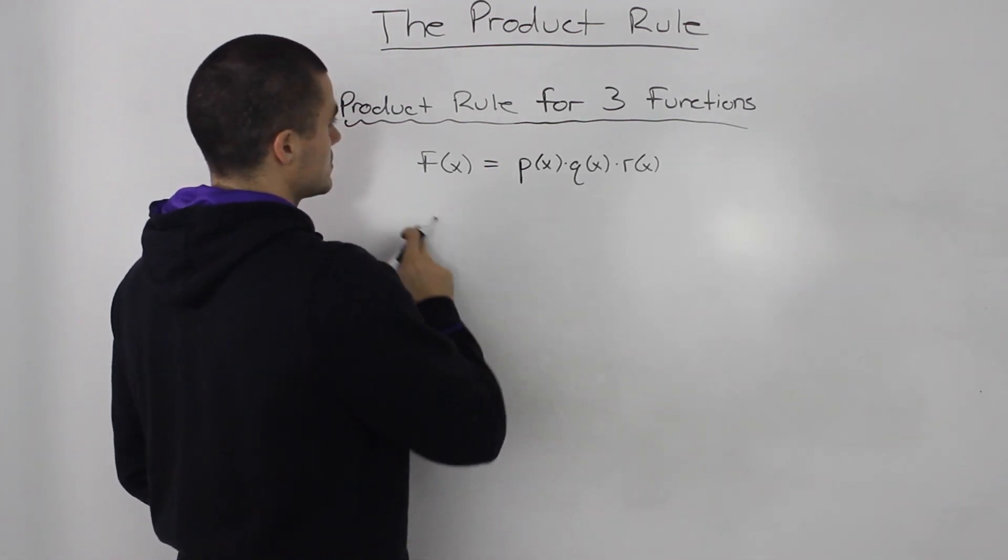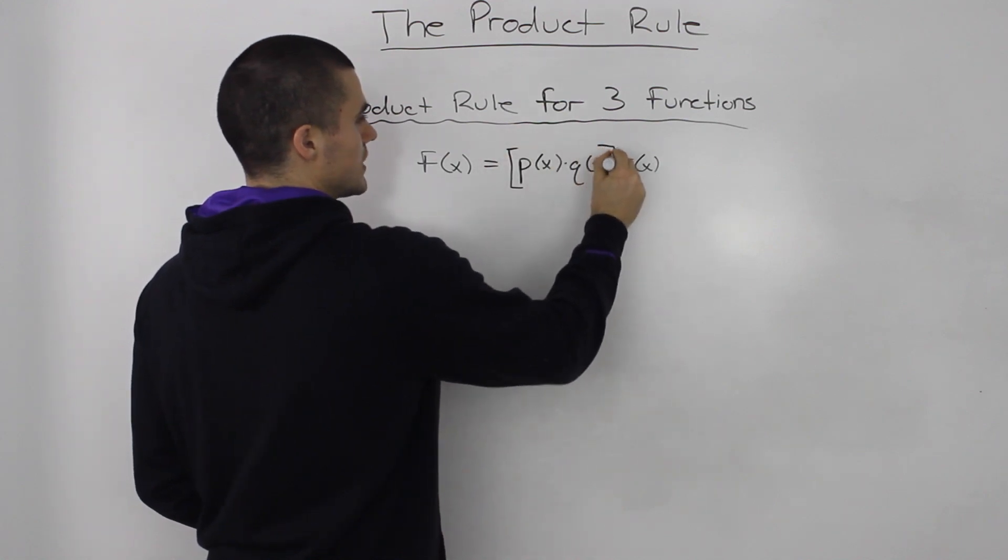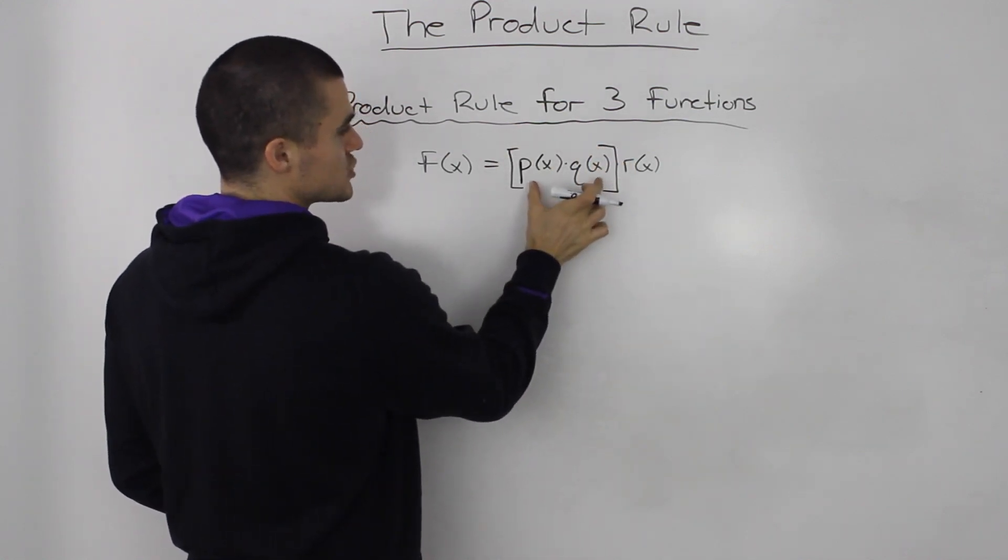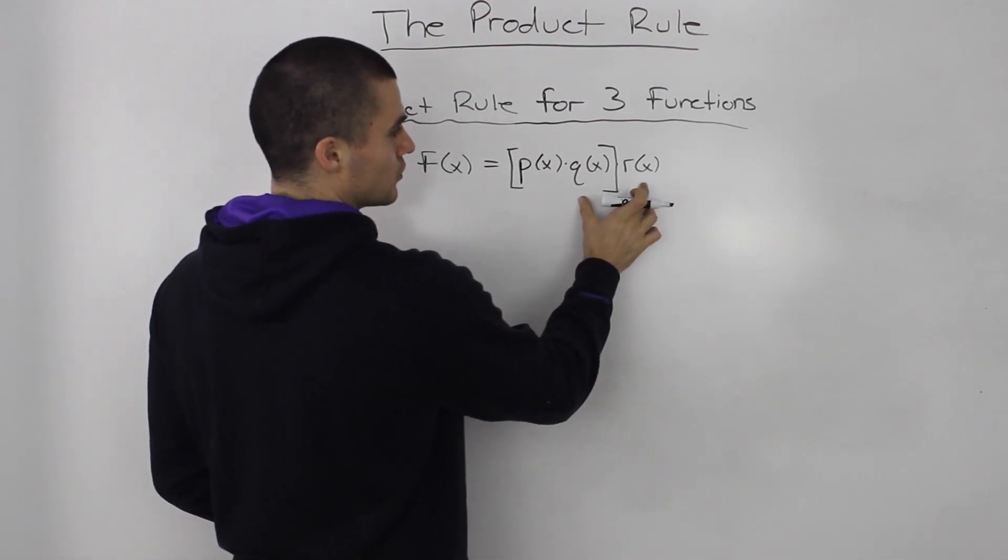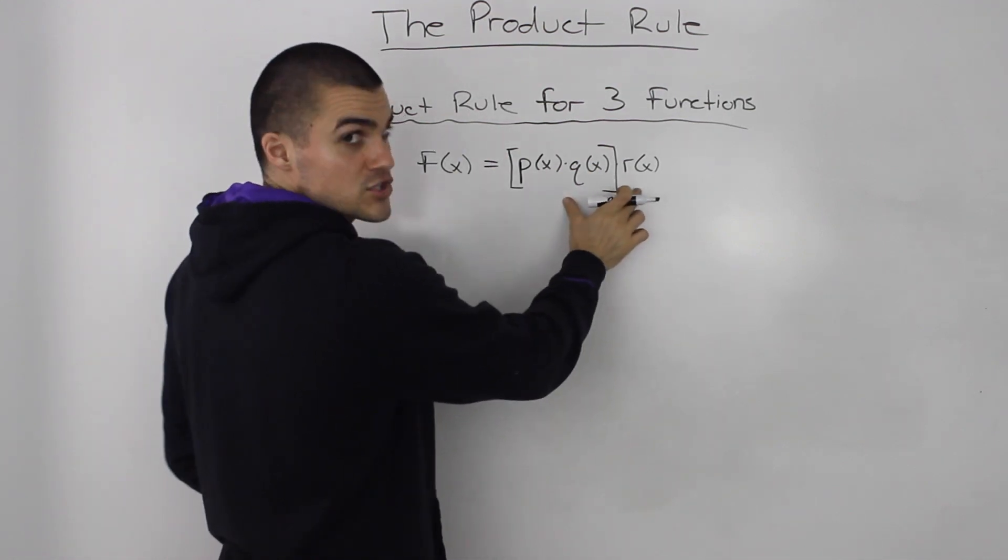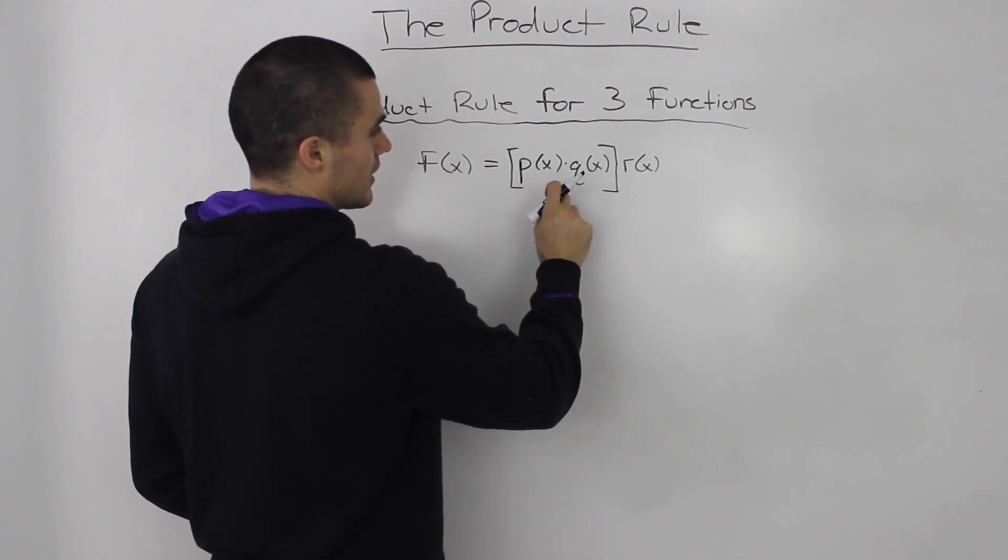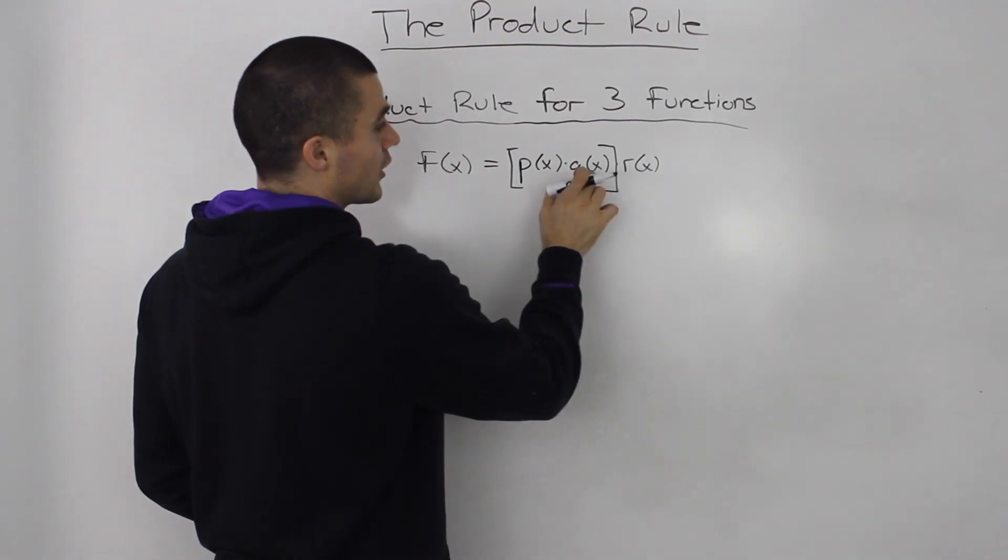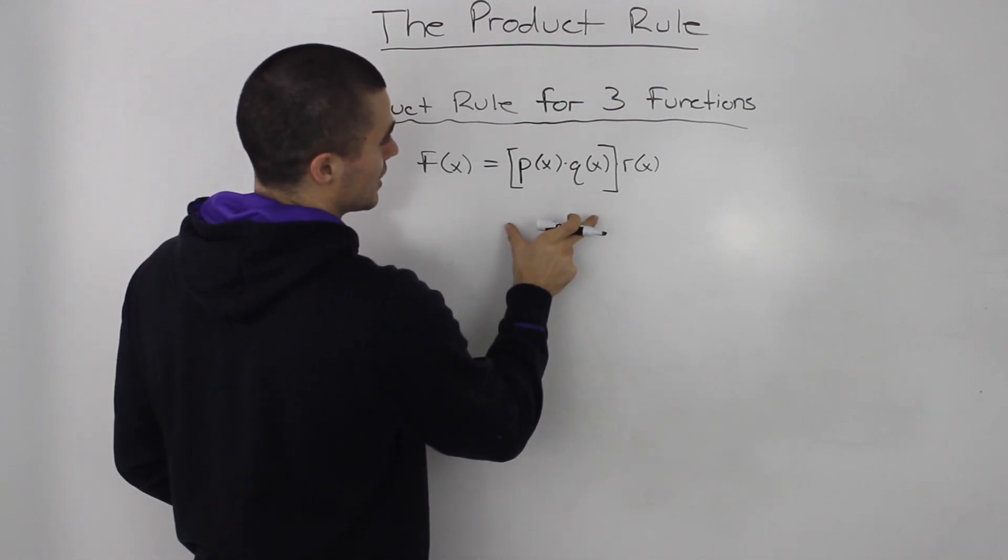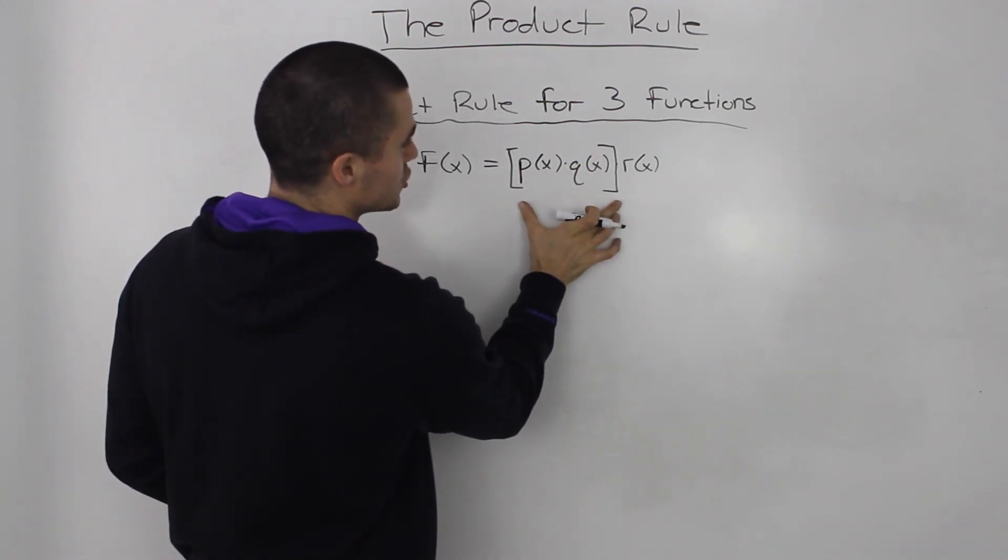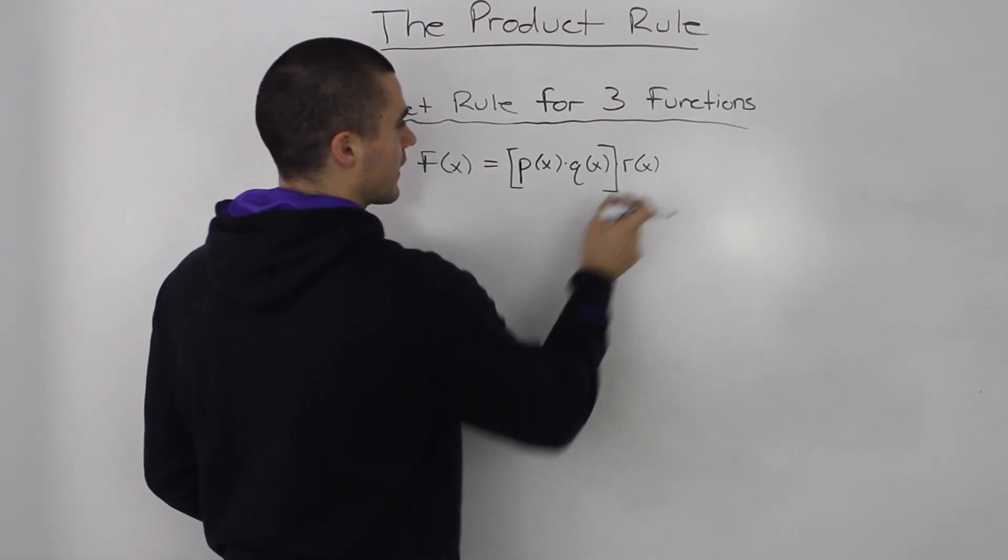To get the derivative of it, the first thing that we can do is treat this square bracket, these two functions, as one function. So we'll just have the product rule, or we'll have a product of two functions here, with the first function being the product of two functions. Basically, I took the first two functions and I'm going to treat it as one. So we got this one function here, this square bracket, and then this r(x).